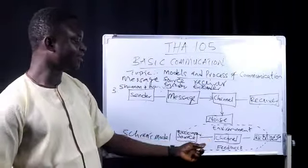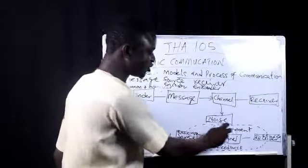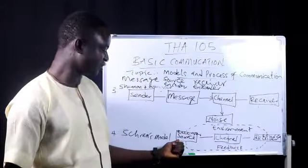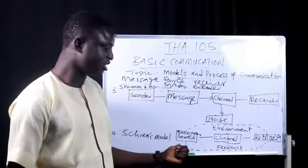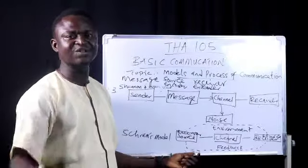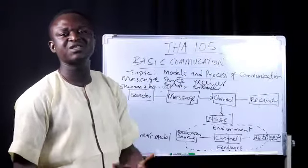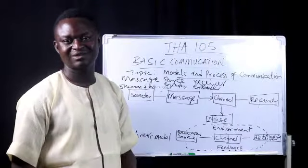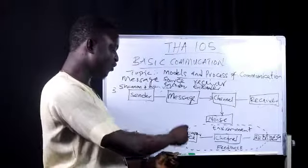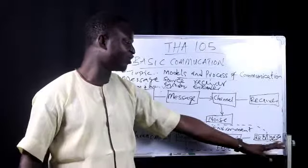The place of noise in Schramm's model is key. According to him, all elements in the communication process are affected by noise. The noise may come from the source — for example, the tone of the message or even the language. Language could be a noise: if a person is speaking in their local language, to you it is noise. That tone or language is a noise that affects the source. If noise from the source is not taken care of, the receiver may not be carried along.